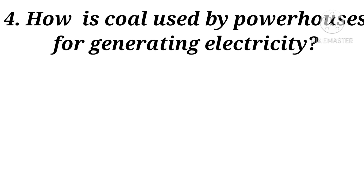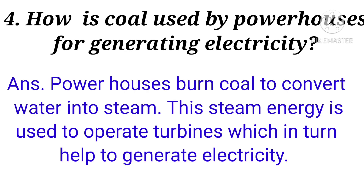Let's move to the next question: how is coal used by powerhouses for generating electricity? Coal کو water کو steam میں چینج کرنے کے لئے use کیا جاتا ہے، پھر یہی steam energy turbines کو operate کرنے کے لئے use کی جاتی ہے جس سے electricity generate ہوتی ہے۔ The answer is: powerhouses burn coal to convert water into steam. This steam energy is used to operate turbines, which in turn help to generate electricity.